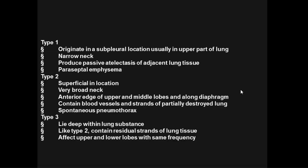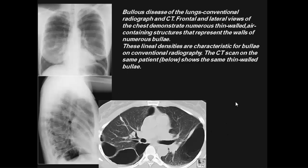Types of bulla disease: Type 1 presents as subpleural; Type 2 is superficial and causes spontaneous pneumothorax; Type 1 is also present in paraseptal emphysema; Type 3 is deep within the lung. Examples of bullous disease of the lung are shown with conventional and CT studies, with curvilinear shadow and curvilinear density.